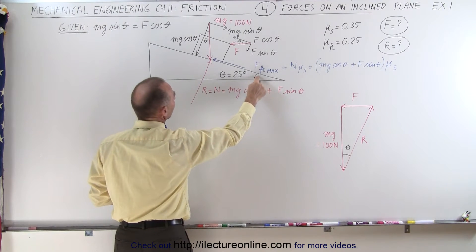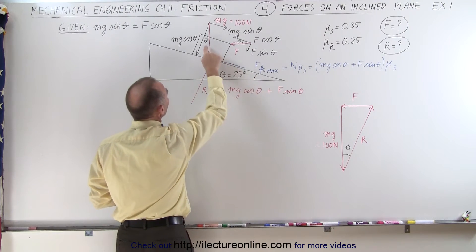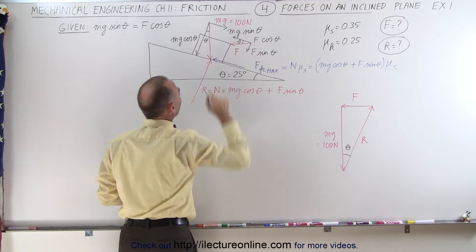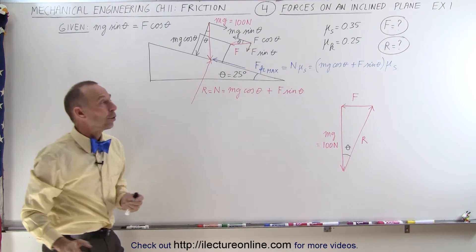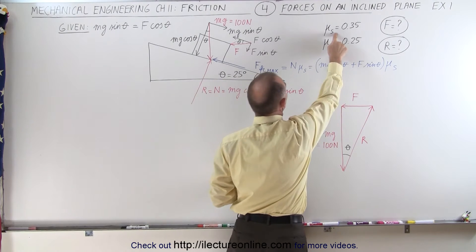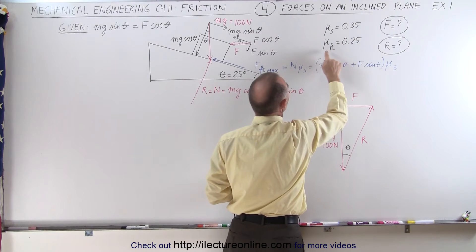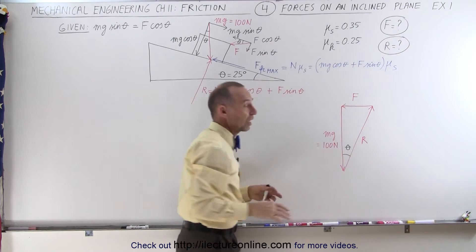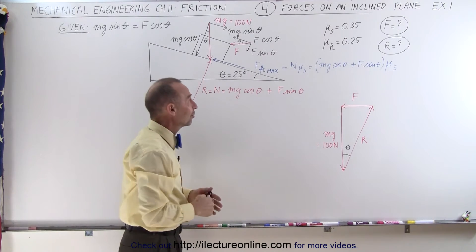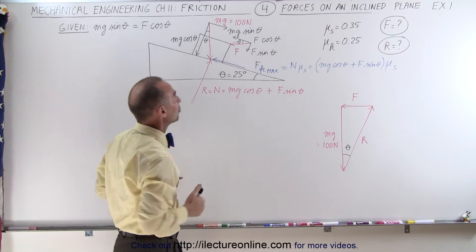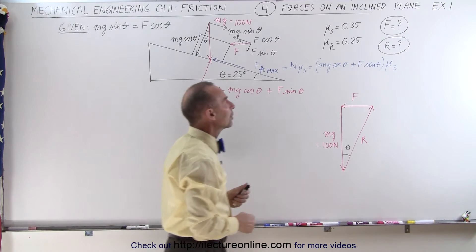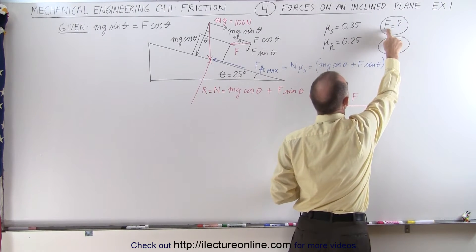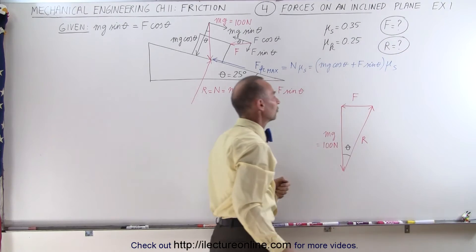Notice that this angle theta — 25 degrees — is equal to this angle theta here, which is equal to that angle theta over there. The coefficient of static friction is 0.35 and the coefficient of kinetic friction is 0.25. However, we are not going to need the coefficient of kinetic friction because nothing is moving in our example. We are going to find the magnitude of force and the magnitude of the reaction force.